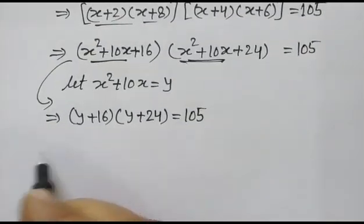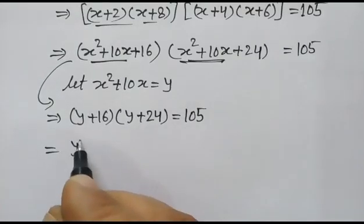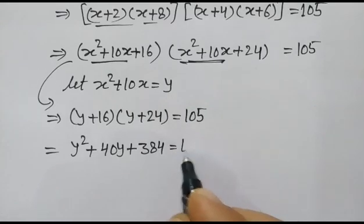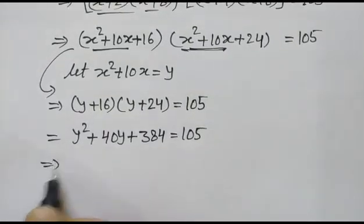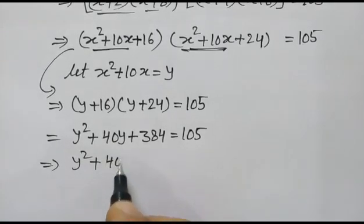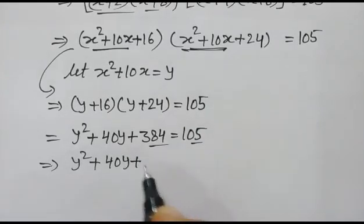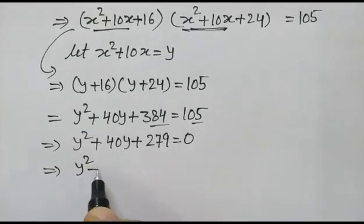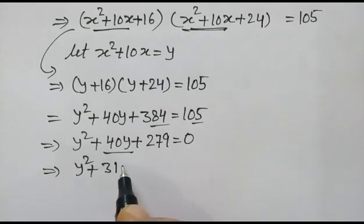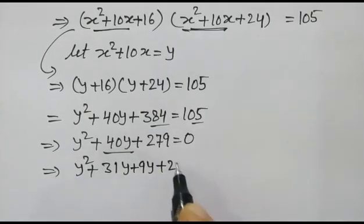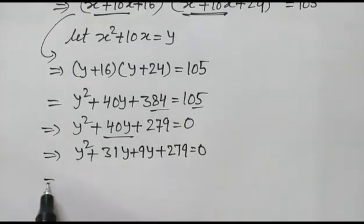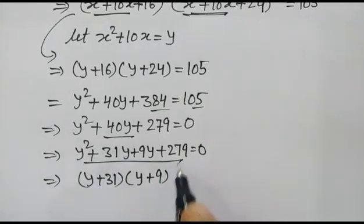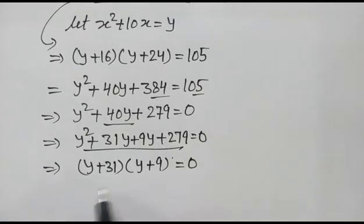If we multiply these two, we get y²+40y+384 = 105, which gives y²+40y+279 = 0. Factoring: y²+31y+9y+279 = 0, so (y+31)(y+9) are factors, equal to 0. Now we have two cases.